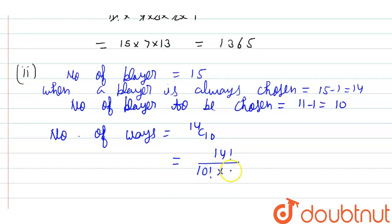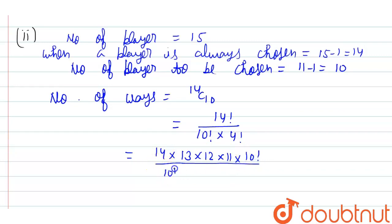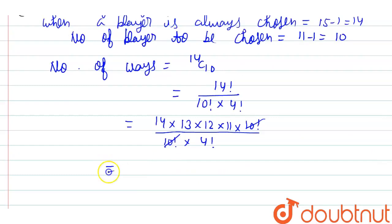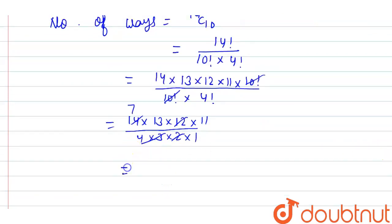14C10 equals factorial 14 upon factorial 10 into factorial 4. Expanding: 14 × 13 × 12 × 11 × factorial 10, upon factorial 10 into 4 × 3 × 2 × 1. Factorial 10 cancels out. Then 4 × 3 = 12 cancels with 12, and 14 becomes 7. We are left with 7 × 13 × 11 = 1001. This is the final answer for option two.